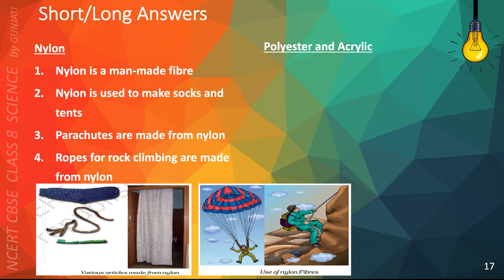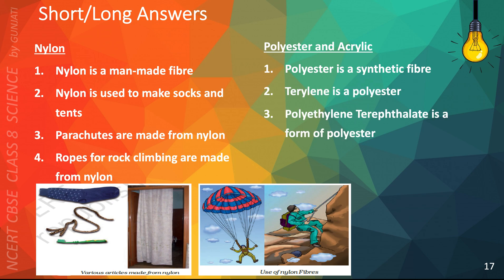The following points will help you answer questions on Polyester and Acrylic. Polyester is a synthetic fiber. Terylene is a polyester. Polyethylene Terephthalate is a form of polyester. Acrylic is a fiber similar to wool. Acrylic is synthetic.